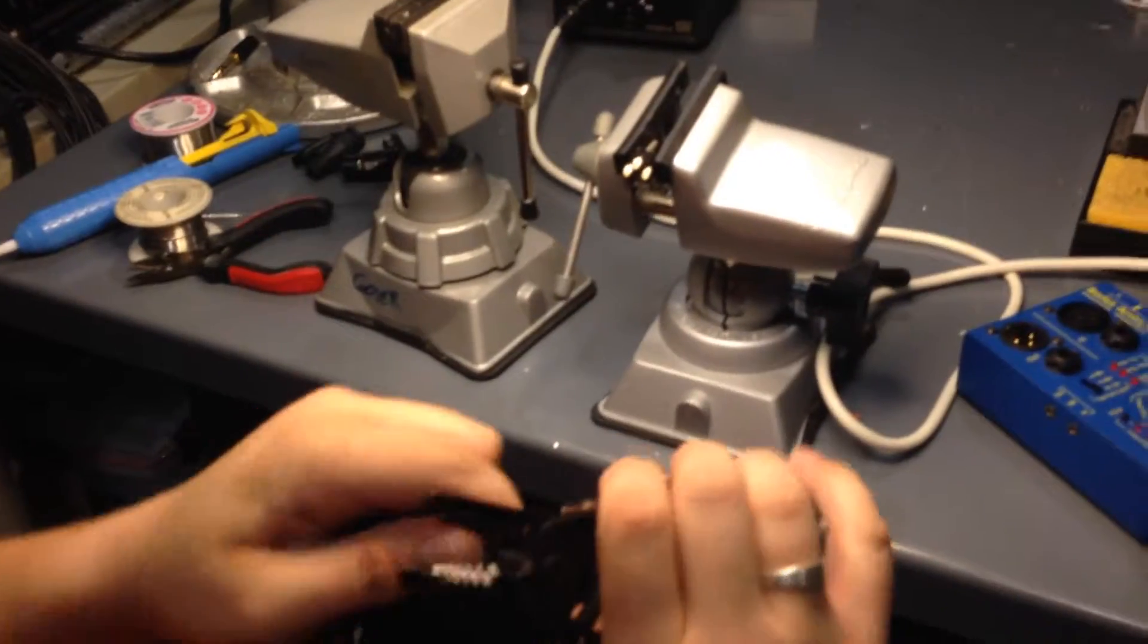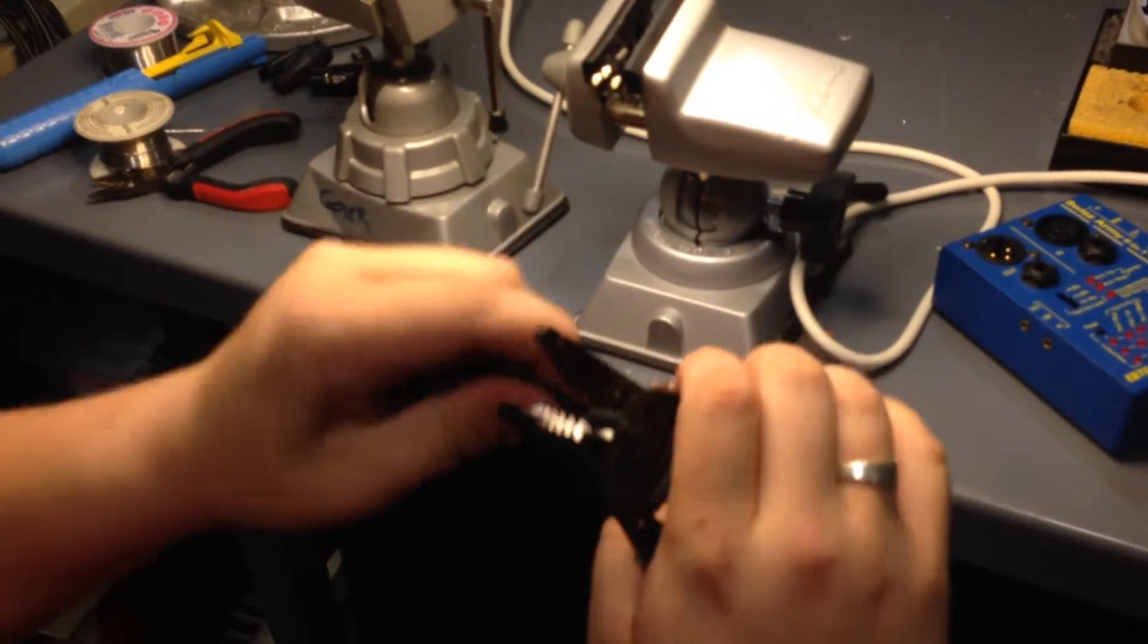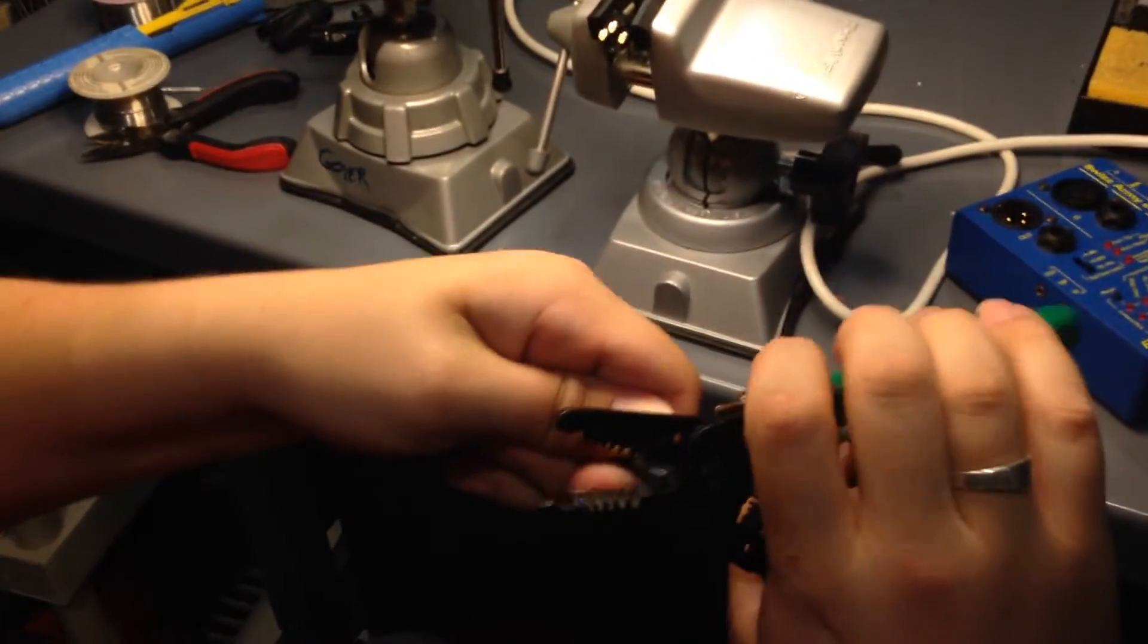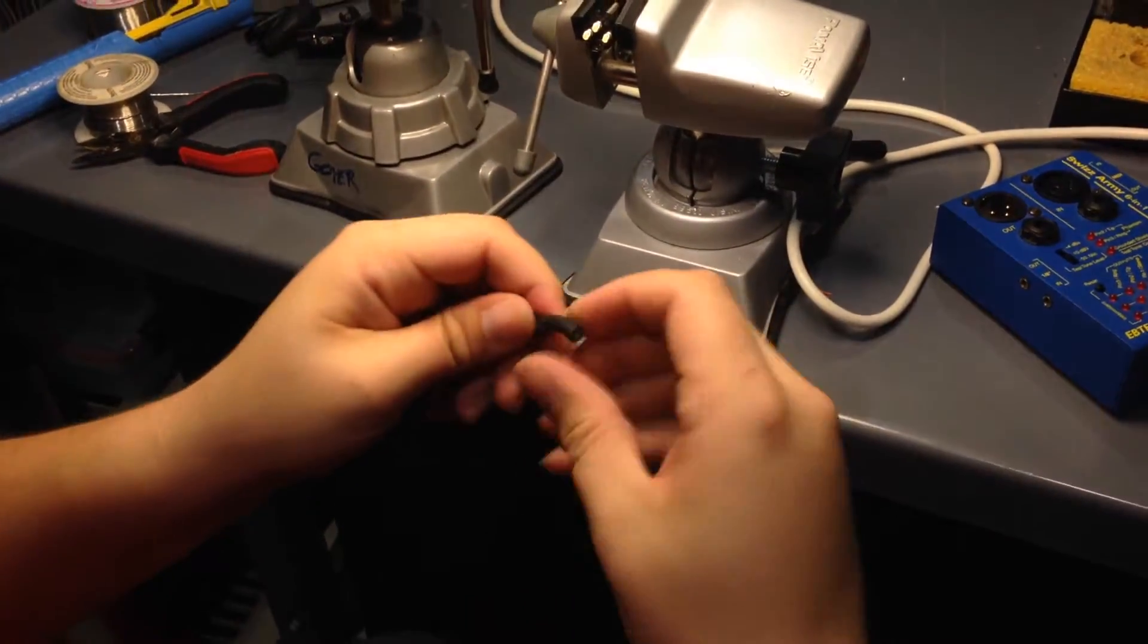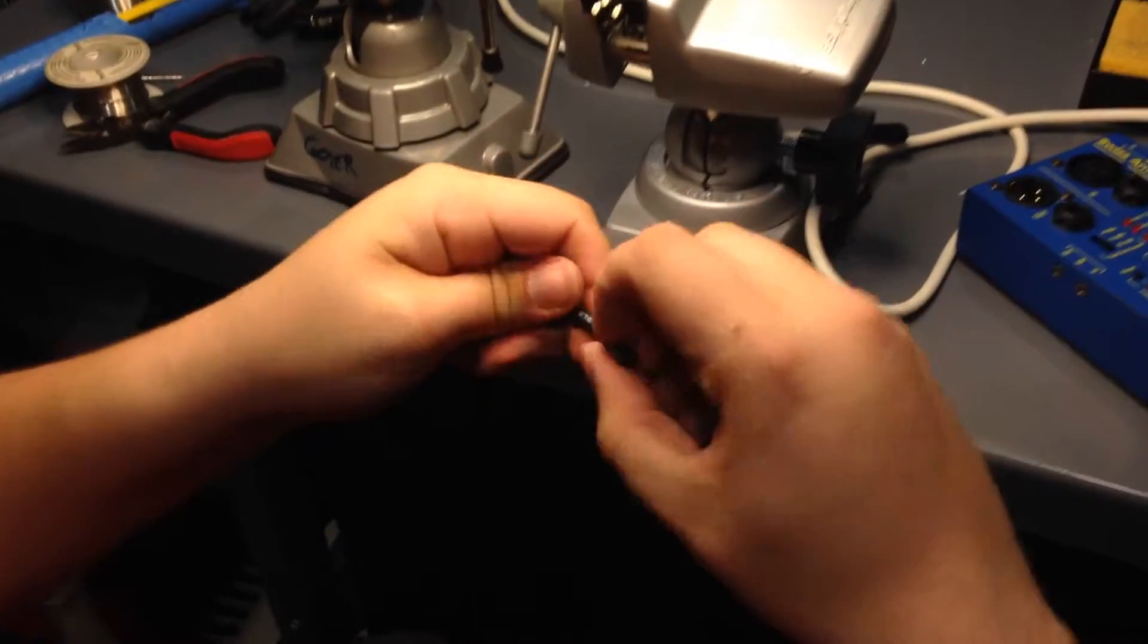Okay, first thing we're going to do is strip away the rubber insulation just to where you can see the cable there and then pull it off.